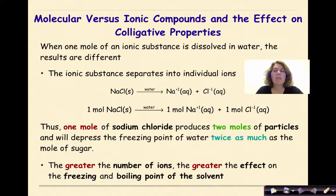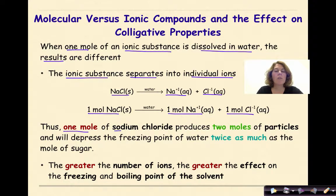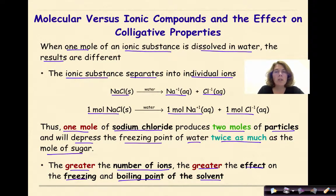Molecular versus ionic compounds and the effect on colligative properties. When one mole of an ionic substance is dissolved in water, the results will be different. The ionic substance separates into individual ions. For example, sodium chloride as a solid dissolved in water will break down into sodium ions and chloride ions, which are mobile charged particles. We can think about this as: one mole of sodium chloride dissolved in water will form one mole of sodium ions and one mole of chloride ions. Thus, one mole of sodium chloride produces two moles of particles and will depress the freezing point of water twice as much as one mole of sugar. The greater the number of ions, the greater the effect on the freezing and boiling point of the solvent.